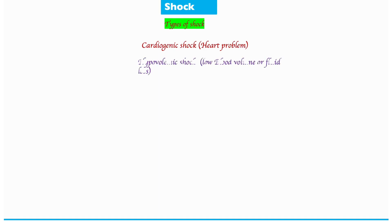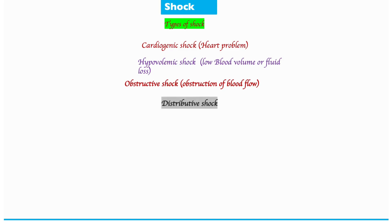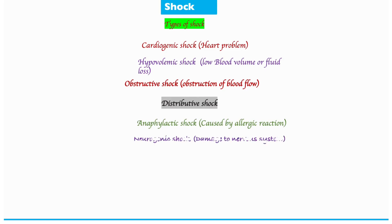We have different types of shock. The first one is cardiogenic shock, caused as a result of obstruction of blood flow. Then we have distributive shock, and under distributive shock we have anaphylactic shock, caused by allergic reaction, neurogenic shock caused due to damage to the nervous system, and septic shock caused as a result of infection.